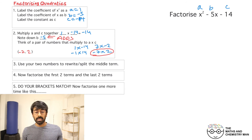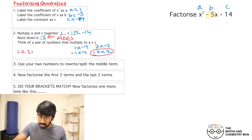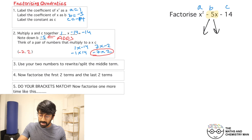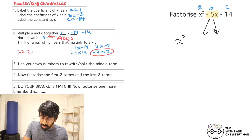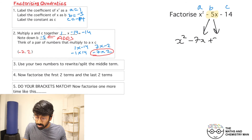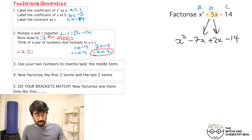The pair that adds to minus 5 is minus 7 and 2, because minus 7 plus 2 is minus 5. So note down minus 7 and 2. Now split the middle term — highlighted in yellow — into minus 7x and plus 2x. So we have x squared, then minus 7x, then plus 2x, then minus 14.